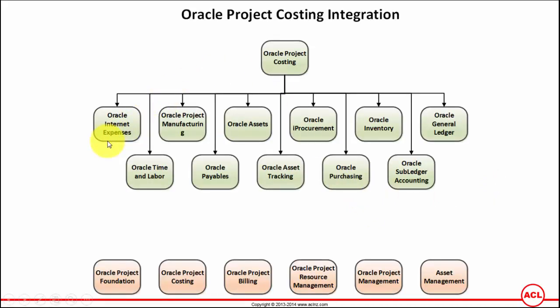As you could see, it integrates with Oracle Internet Expenses for things such as expenses submitted by employees and contractors against the project. It integrates with Time and Labor for the timesheets submitted by employees and contractors, and with Project Manufacturing for the costs associated with building a project that involves manufacturing.